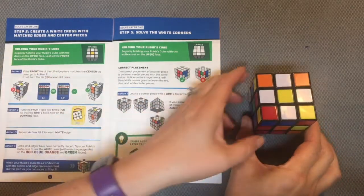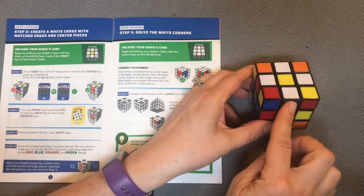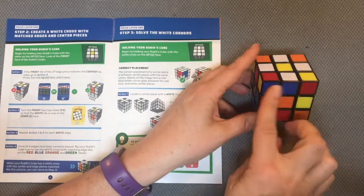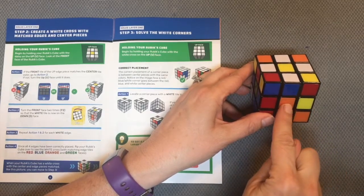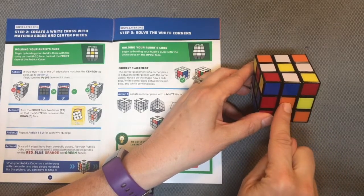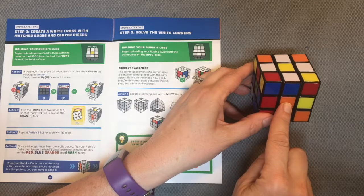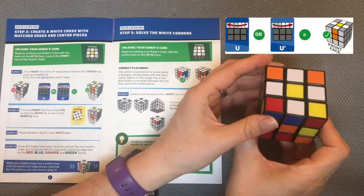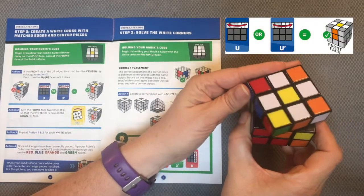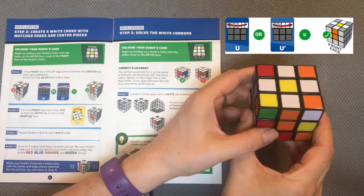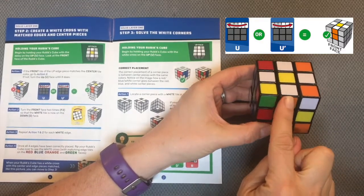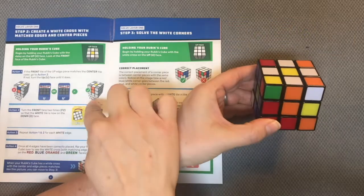Action 1 is to look at the middle layer on my front face. Here's my up face and my front face, and I'm looking for these to match. They do not match here, so what I need to do is turn my up face, either right or left, until they match. All I needed was one turn to have them match. They happen to be orange, just like I see here.